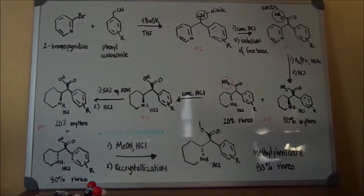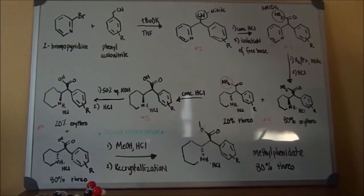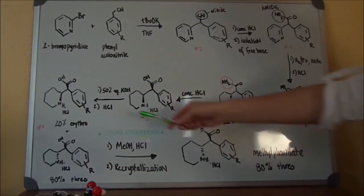Structure number five is then treated with 50% aqueous potassium hydroxide, and secondly, with hydrochloric acid to produce a racemic mixture of enantiomers.